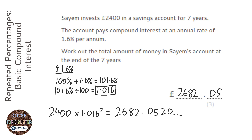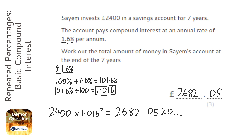The last step is to check that the answer makes sense. We put in £2400 into a savings account for seven years and got out roughly £2682 — so we've made about £200. The interest rate of 1.6 percent is quite low, so we wouldn't expect very much money, meaning £200 is about right. If you ended up with less money at the end, alarm bells should be ringing.